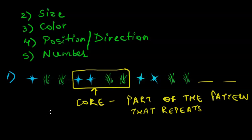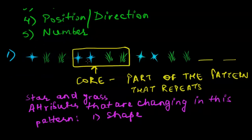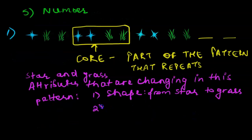Now if we want to describe the attributes that are changing in this pattern: we have a star and a grass shape, so we have two different shapes in the core. So we say shape is changing — from star to grass. Next, we look at number: we have two stars and two grass shapes, so the number is not changing. Then we look at color — we have a blue star and a green grass shape, so color is changing from blue to green.